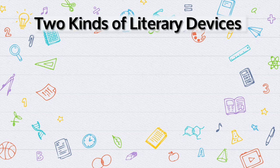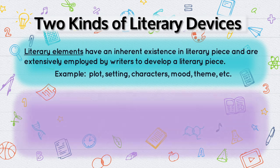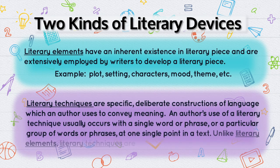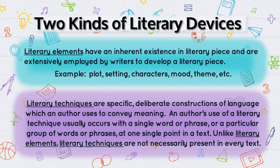There are two kinds of literary devices: literary elements and literary techniques. Literary elements have an inherent existence in a literary piece and are extensively employed by writers to develop it — for example, plot, setting, characters, mood, theme, etc. Literary techniques, instead, are specific, deliberate constructions of language which an author uses to convey meaning, usually occurring at one single point in a text. Unlike literary elements, literary techniques are not necessarily present in every text.